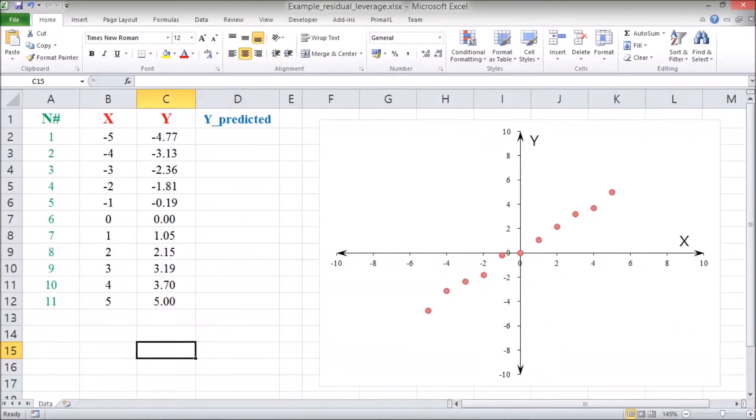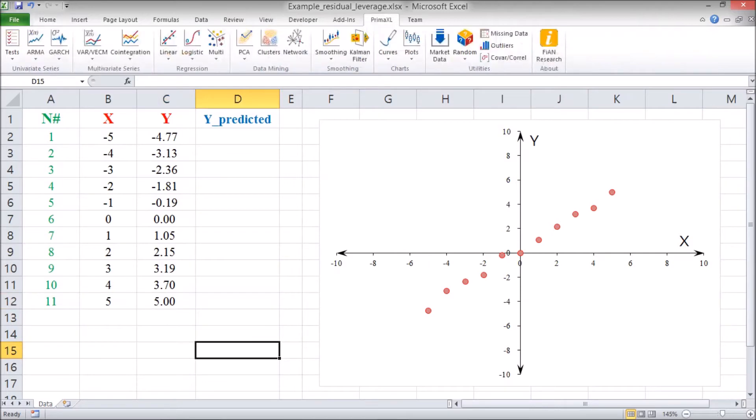For this example, we have a simulated data set. The x-variable goes from minus 5 to 5, and the y-variable has some statistical noise built-in. And the relationship between x and y seems to be roughly linear. We go to the PrimExcel tab, select Linear, and then Forecast.